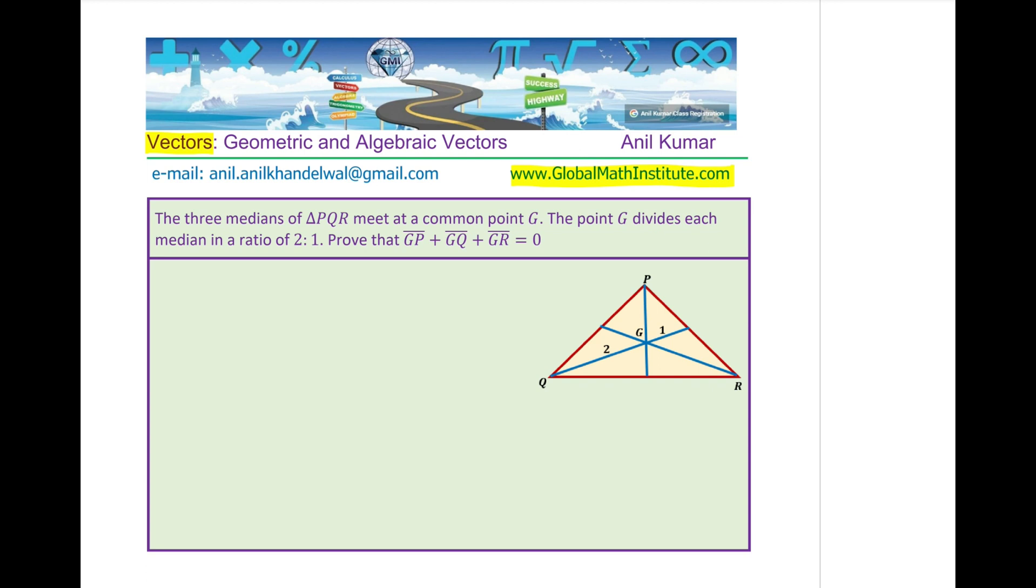The question is: the three medians of triangle PQR meet at a common point G. The point G divides each median in the ratio of 2 is to 1. Prove that GP plus GQ plus GR equals to 0.